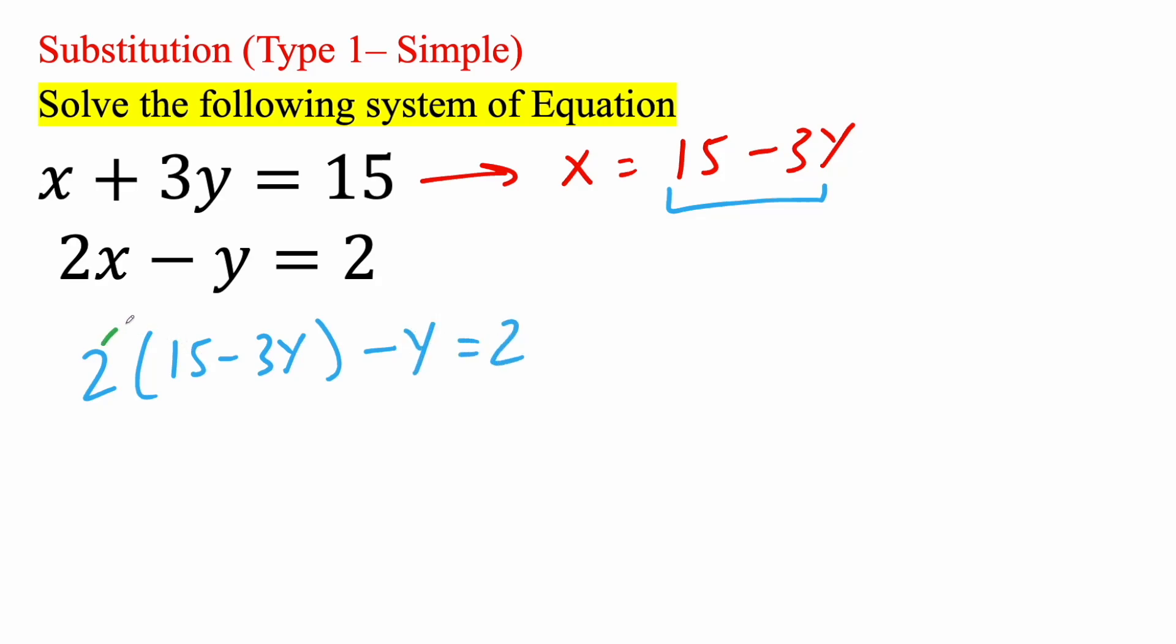We're going to use the distributive property next. So 2 times 15, 2 times negative 3y. 2 times 15 is 30. 2 times negative 3y is negative 6y. We still have a minus y here is equal to 2. So now we can combine 30 minus 6y minus 1y, we get negative 7y is equal to 2.